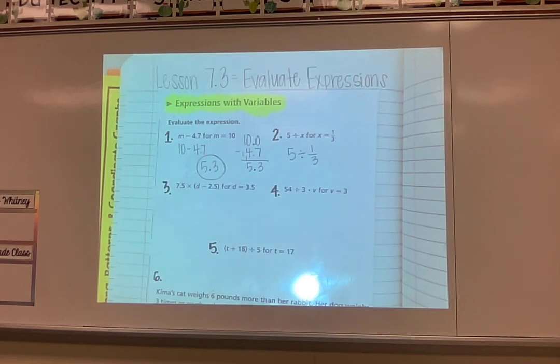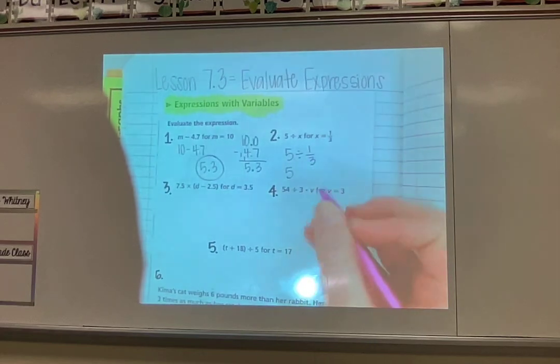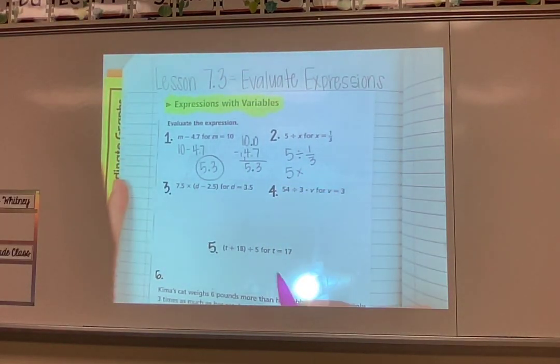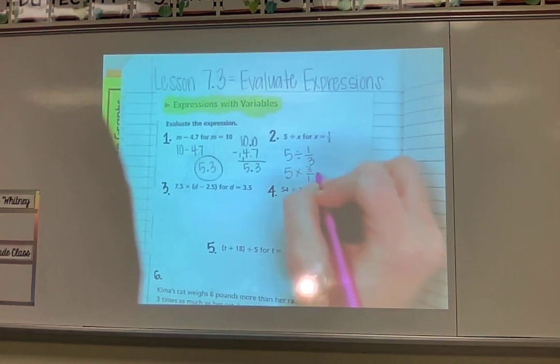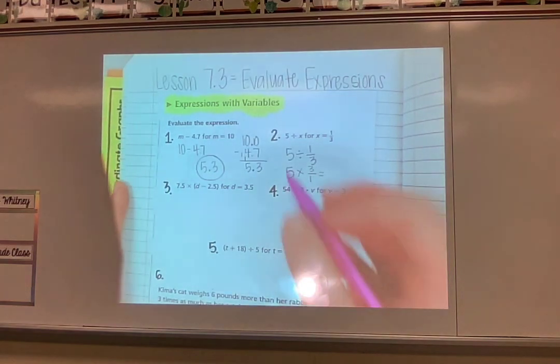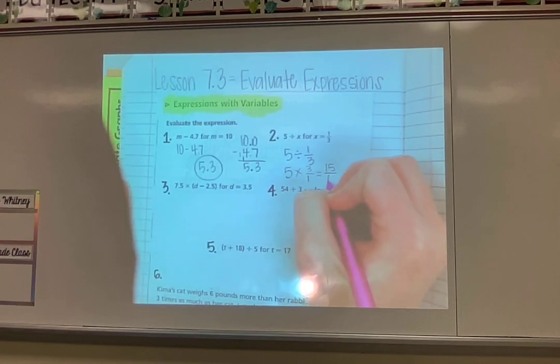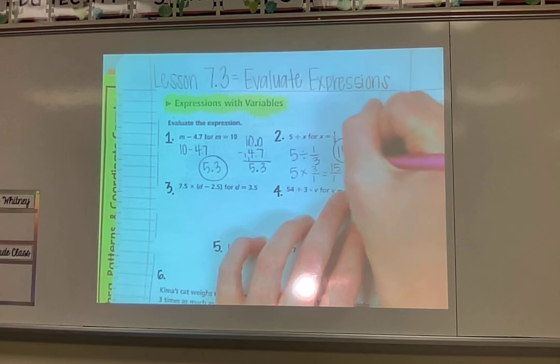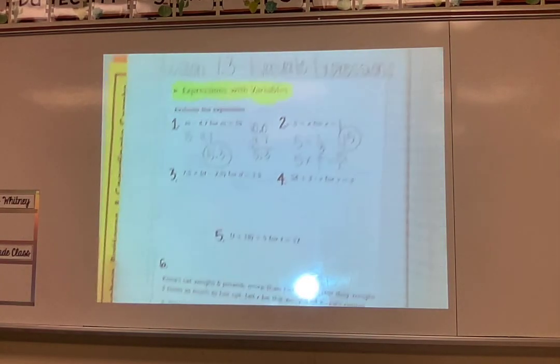Whenever I'm dividing by a fraction, I should be remembering three very important words: same, flip, flip. So my 5 is going to stay the same. I'm going to flip my division to be multiplication. And I'm going to flip my 1/3 to be 3 over 1. Then remember, big number times the top, bottom stays the same. So 5 times 3 is 15. My bottom number would still be a 1, which means that would be a big 15. Not too bad. Let's keep on going.